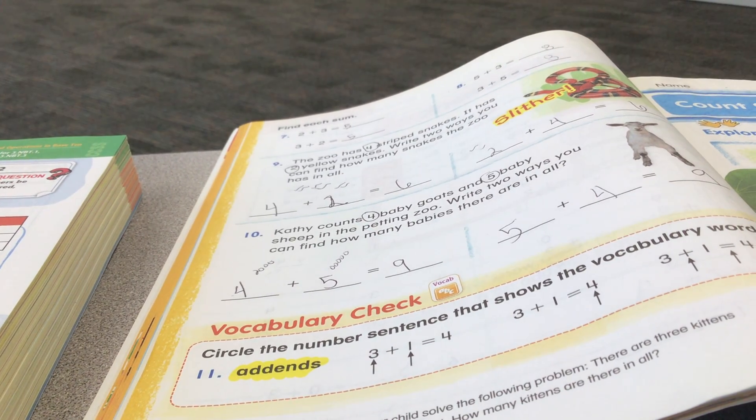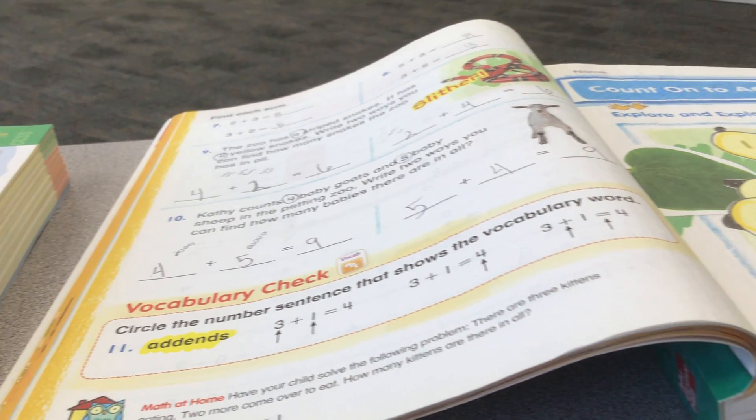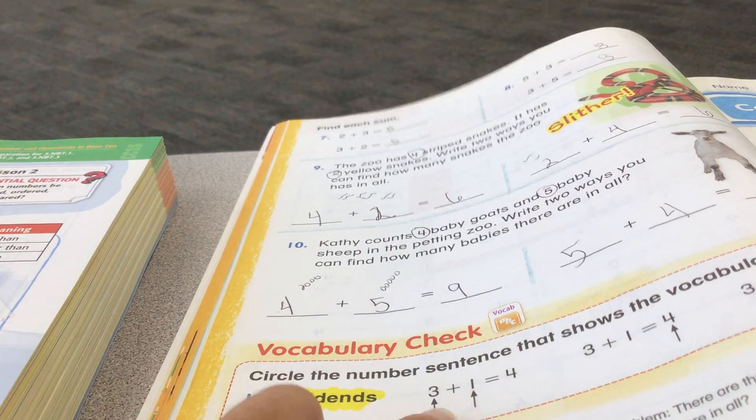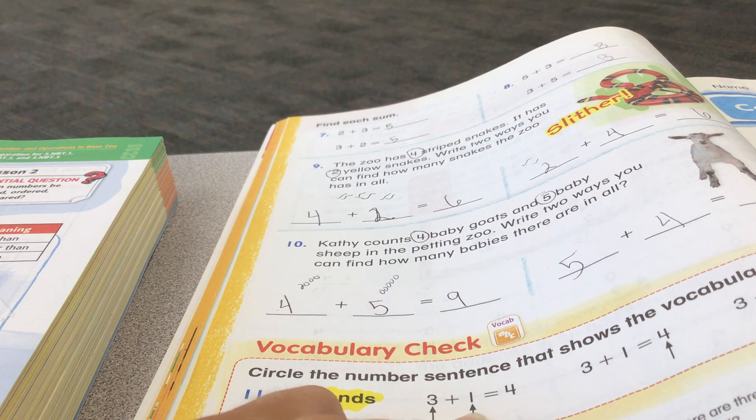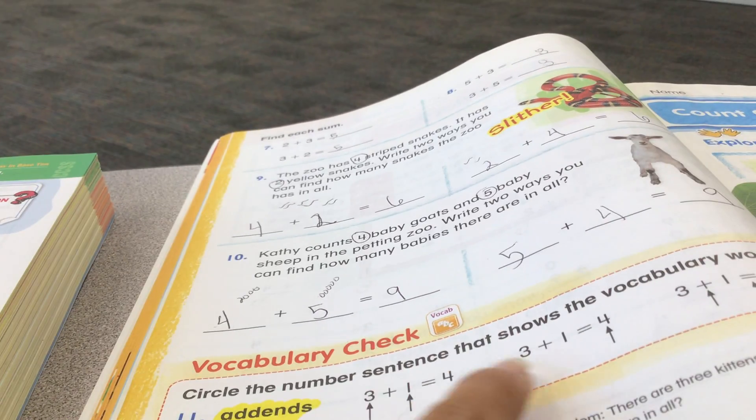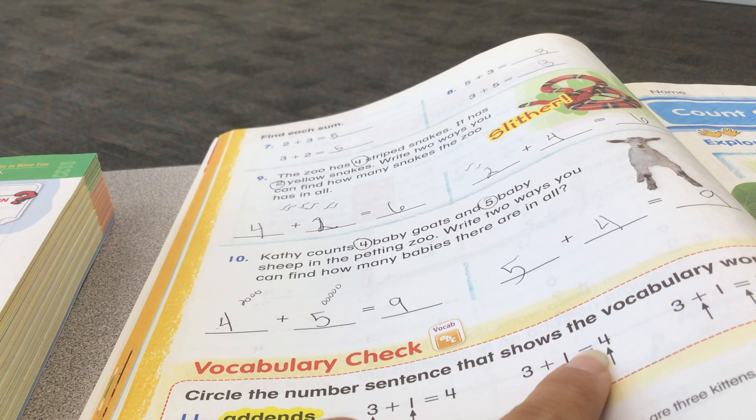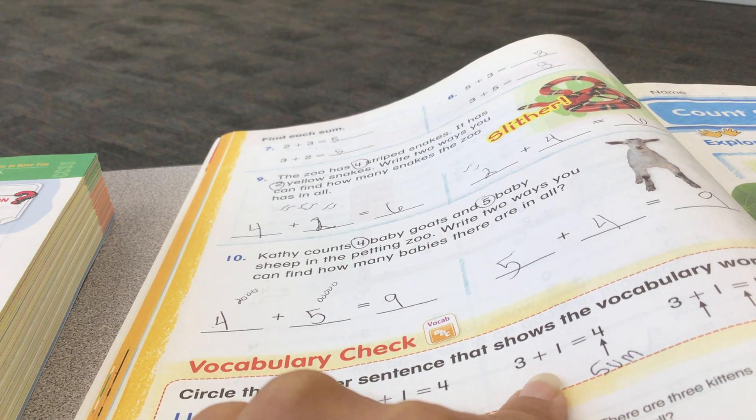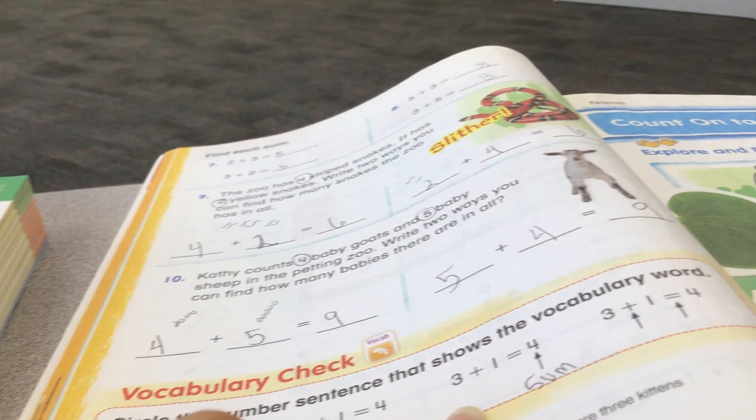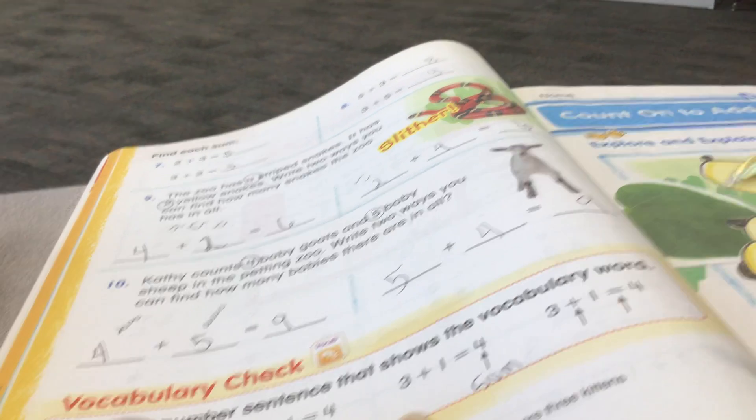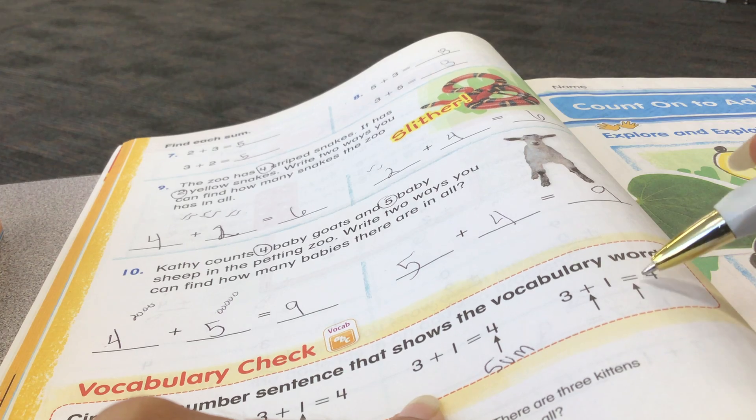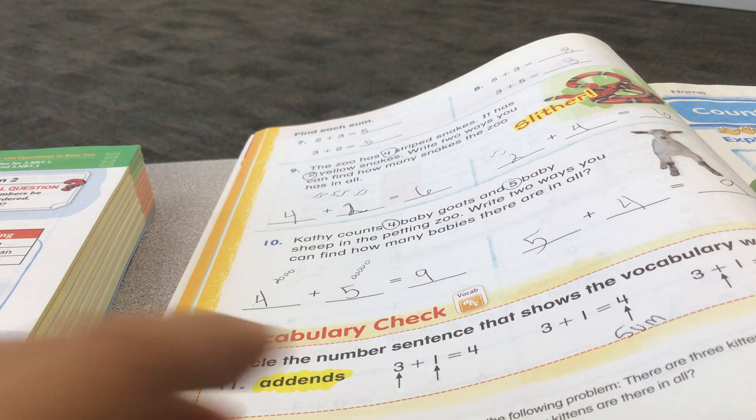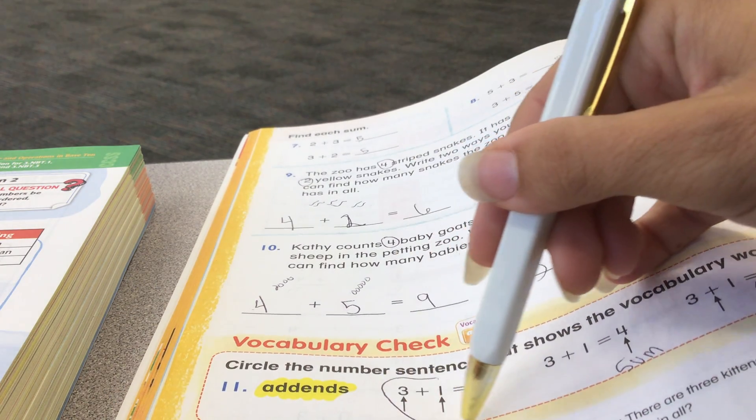Quick check. Circle the number sentence that shows the vocabulary word, addend. So, we're going to look at these arrows. These arrows right here are pointing to two numbers in an addition sentence. This one is pointing to one number. This is the answer. We call this the sum. The answer to an addition sentence is called a sum. And this right here is pointing to the plus sign and the equal sign. Those are not addends. The addends are the two numbers that make up an addition sentence at the beginning. The two numbers that you're adding are called addends.